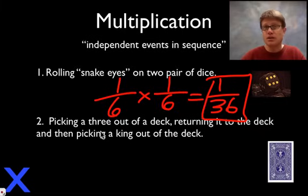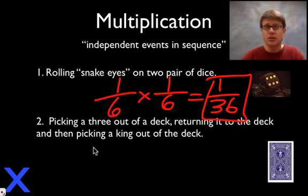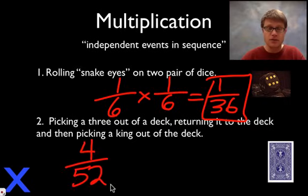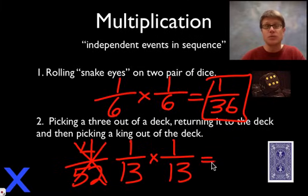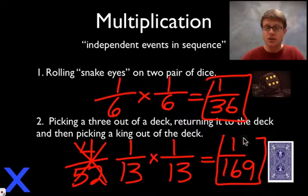What are the odds of picking a 3 out of the deck, returning it to the deck, and then picking a king out of the deck? You have to look at each of those different events because they're happening independently of one another. There are four 3s in a deck of 52 cards, which reduces to 1 in 13. Since you're returning it to the deck there are 52 cards again, so the odds of getting a king are also 1 in 13. The odds of doing both in succession is 1 in 169, so it's going to be really, really rare.